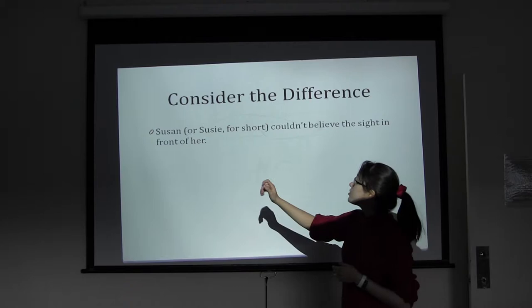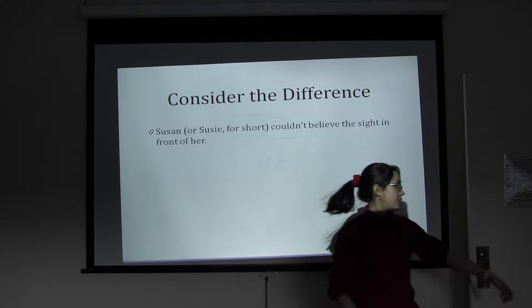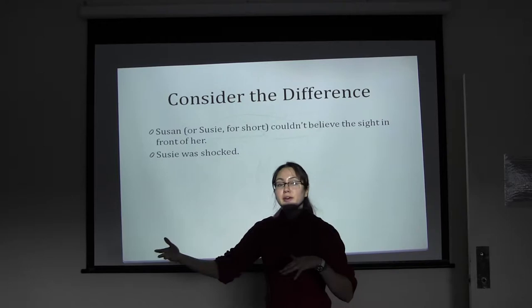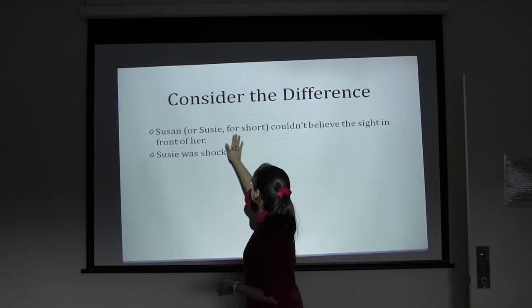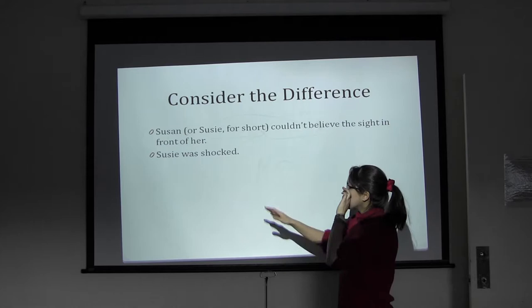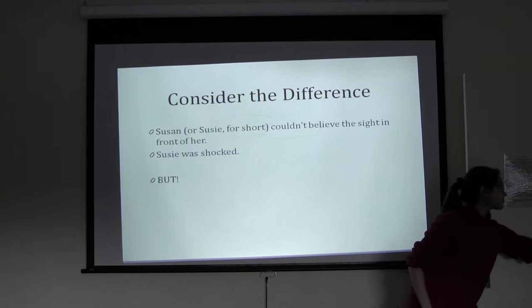Consider the difference between the sentence 'Susan — or Susie for short — couldn't believe the sight in front of her,' and an edited version: 'Susie was shocked.' There's nothing wrong with the original statement; it's perfectly grammatically correct. But if we want to increase the pace and decrease the wordiness, most of us know that Susie is short for Susan, so that first stretch is redundant. Saying 'she was shocked' conveys the same basic idea in a much shorter and more efficient way.